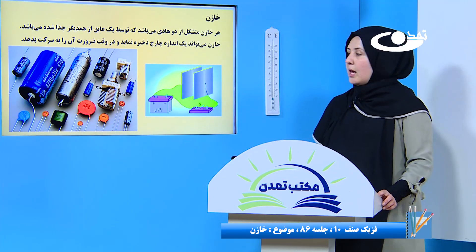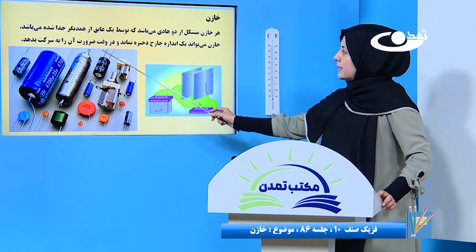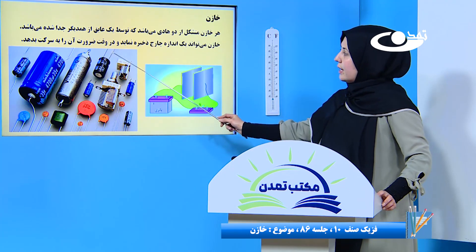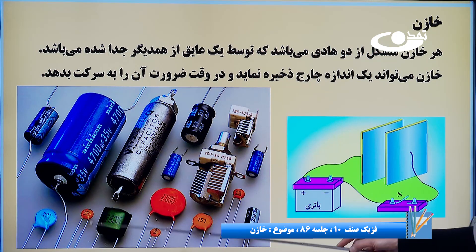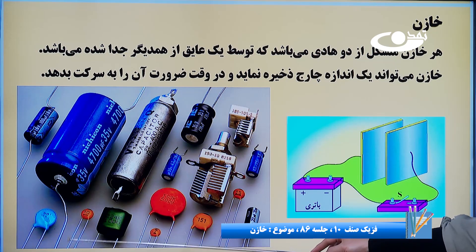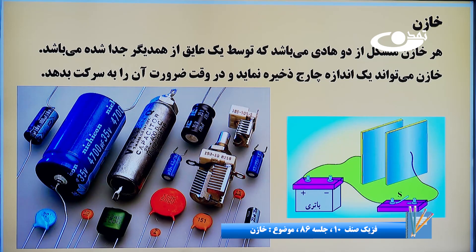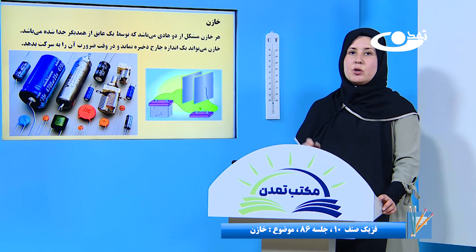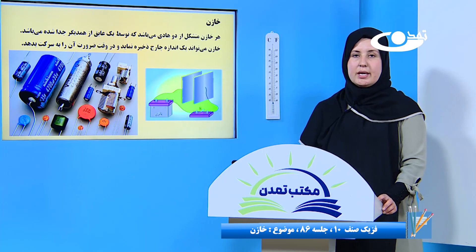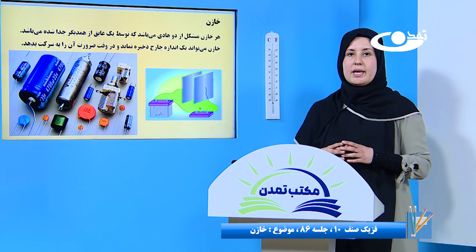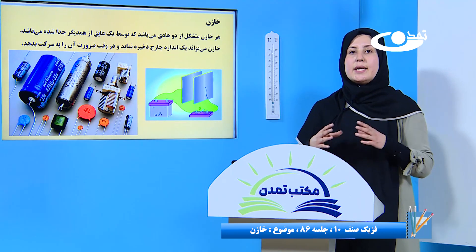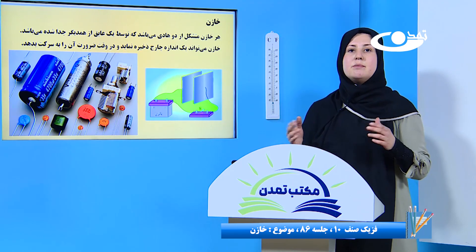شاید شما زمانی که به این شکل‌ها نگاه می‌کنید فکر کنید که خیلی شباهتی با باتری دارند. درست است، ولی ببینید که در این قسمت‌ها ما همین لوحه‌های فلزی را داریم. خازن‌ها دو قسمت اضافه دارند که از باتری فرق می‌کنند.